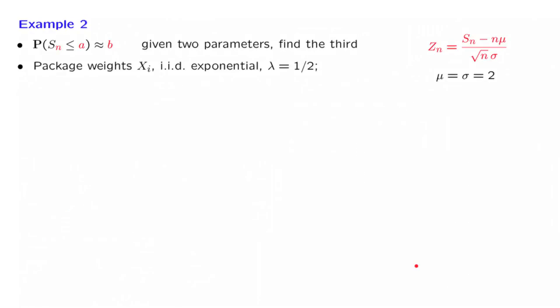In the next example, we ask a somewhat different question. We fix again the number of packages to be 100, but we're given some probabilistic tolerance. We allow the packages' total weight to exceed the capacity of the container, but we don't want that to happen too often. We want to have only 5% probability of exceeding that capacity. How should we choose the capacity of the container if we want this specification?